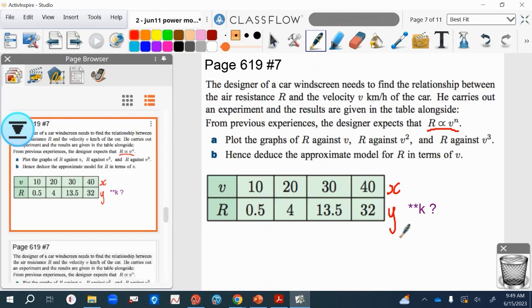So the next example is this one then. It's a bit different. We're plotting the graphs of r, which is air resistance, against v, which is velocity. We're also going to do r against v squared and r against v cubed.